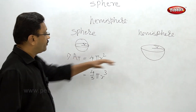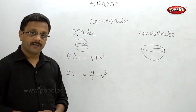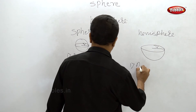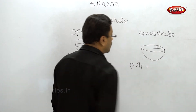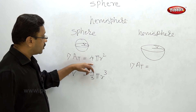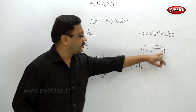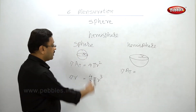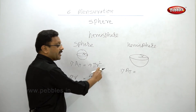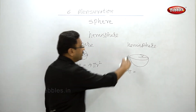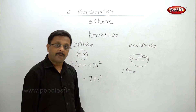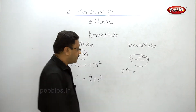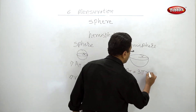In the case of Hemisphere, the total surface area includes the curved surface area and the flat plane surface. The curved surface area will be half of the sphere's, that means 2πr². The top flat surface area is πr² because it is a perfect circle with radius r. So the total surface area of a hemisphere is 3πr².